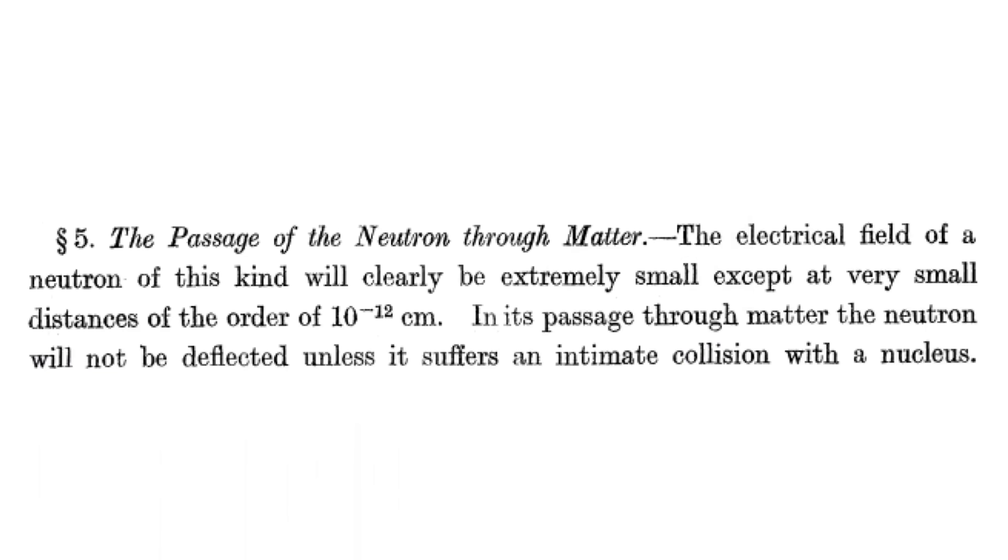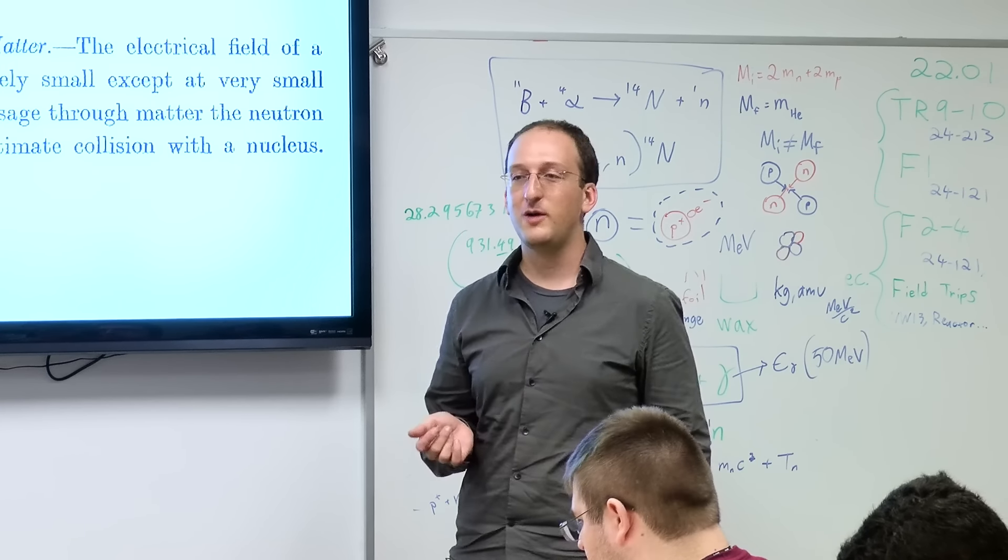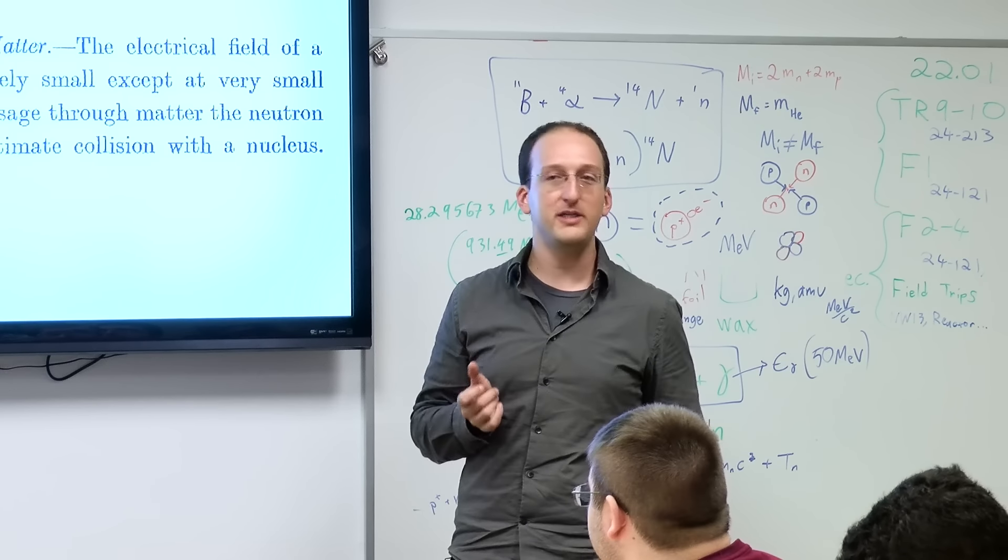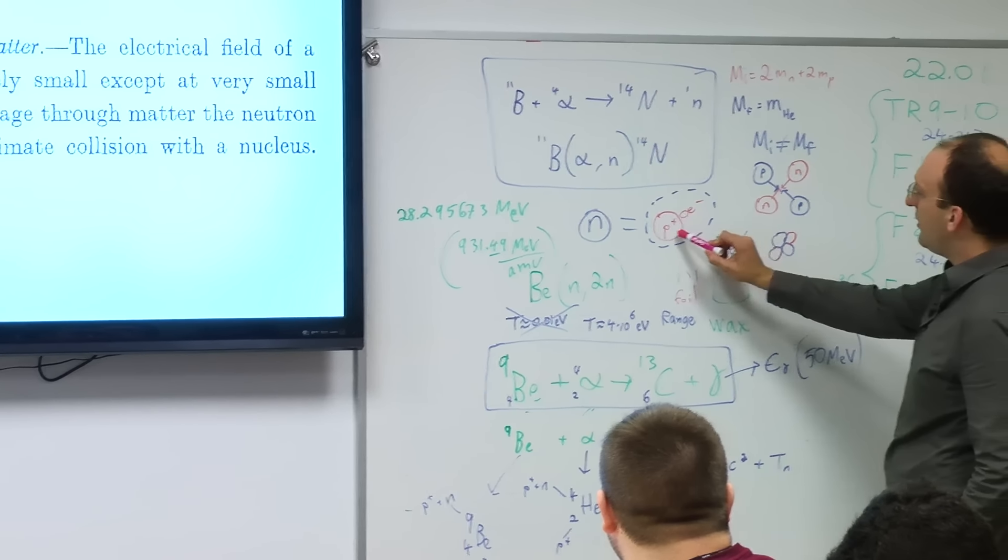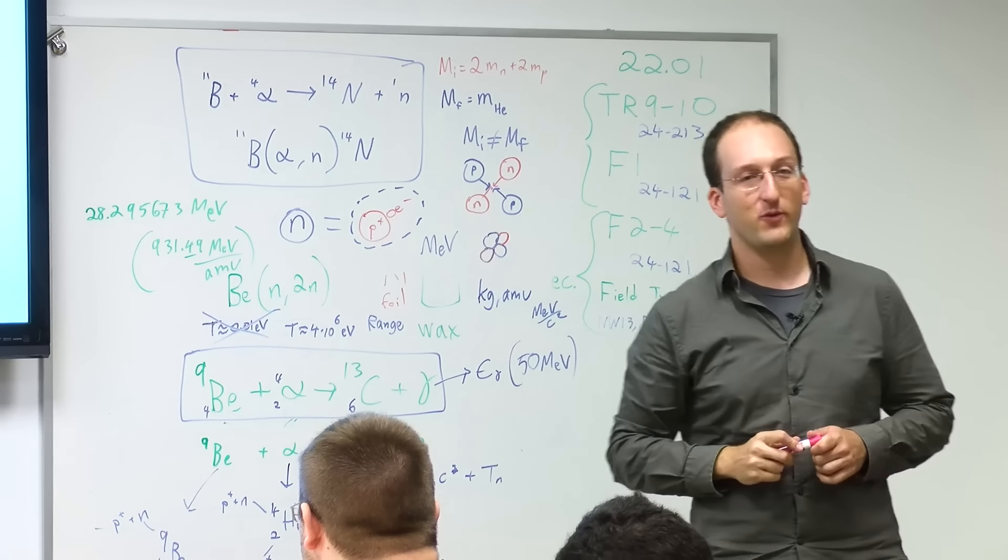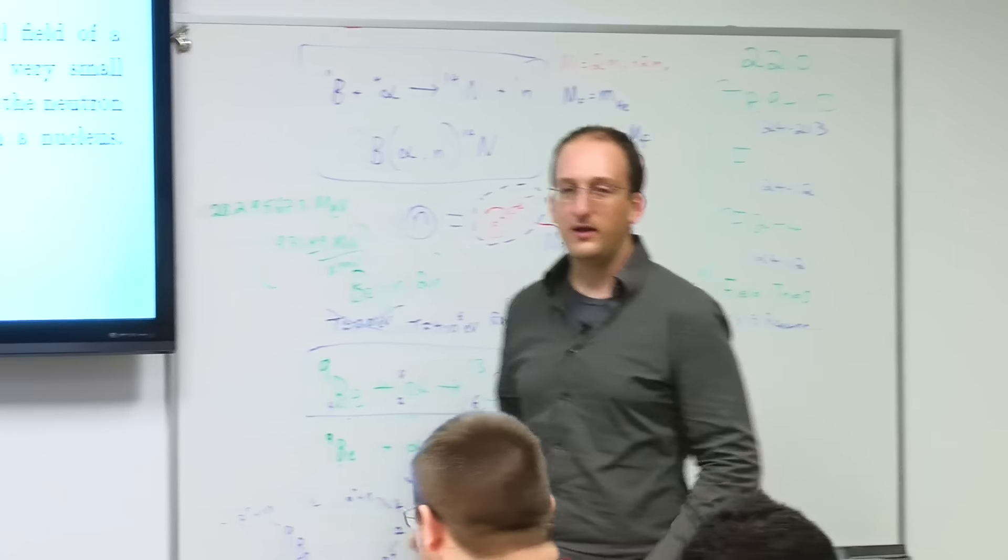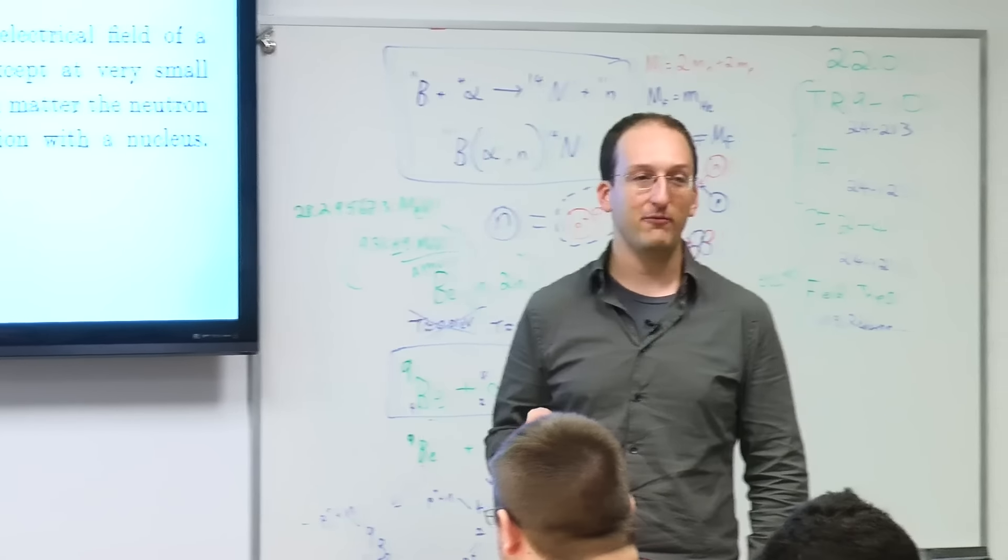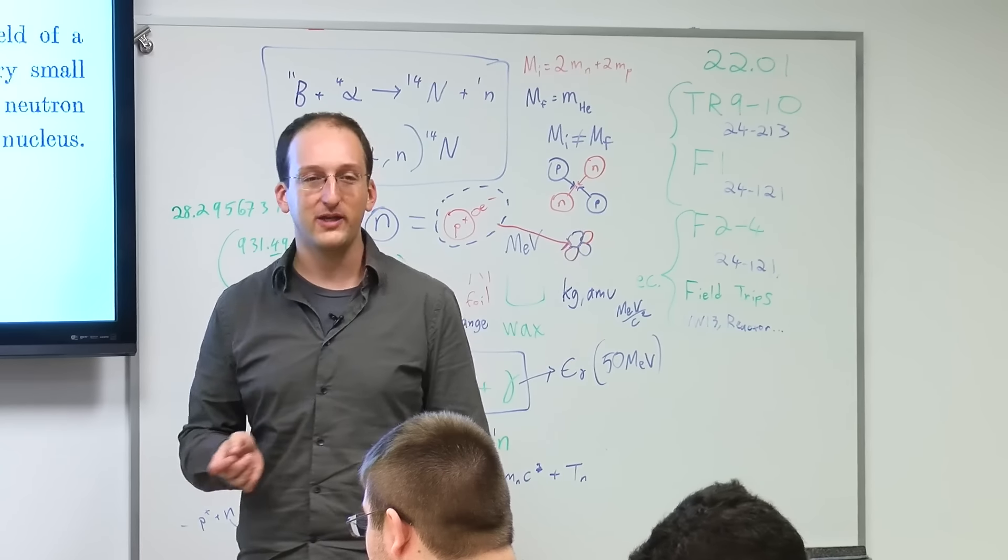And then one of the last things he mentioned is some predictions. He said, let's say this neutron exists—it doesn't have charge. Most matter interacts with other matter by virtue of Coulombic or charge interactions. If the neutron has no charge, it shouldn't really see matter except for nuclei. This is exactly what he said: the electrical field of a neutron will be extremely small except at small distances because he proposed a neutron is a proton plus an electron. So once you get to around the radius of the neutron, you might start to see some charge, but not before.